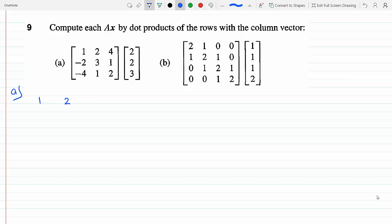So this is part A: 1, 2, 4 dotted with 2, 2, 3. Plus then I move to the second row, staying on the same level. Plus minus 2, 3, 1, and I dot that with the same column vector 2, 2, 3.